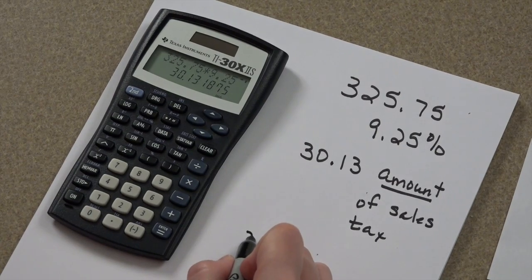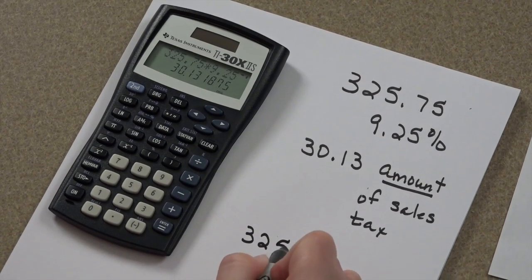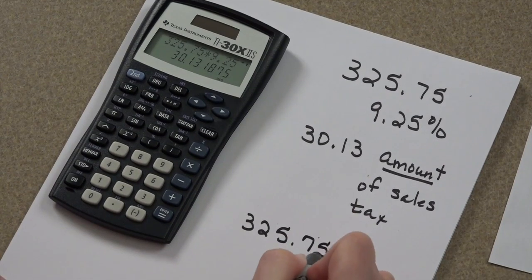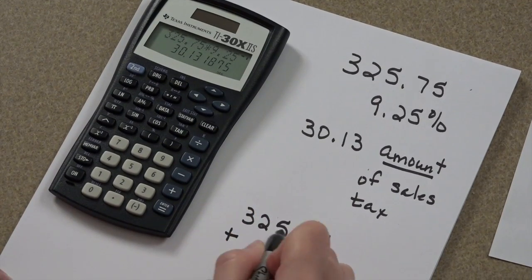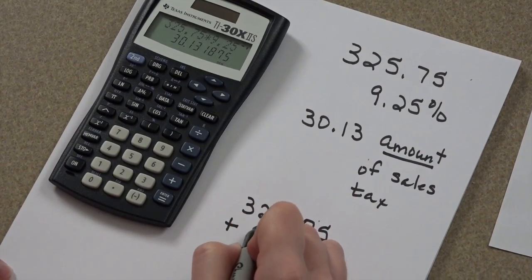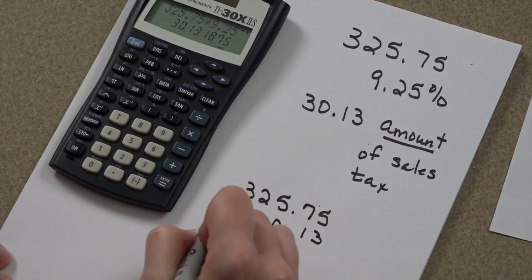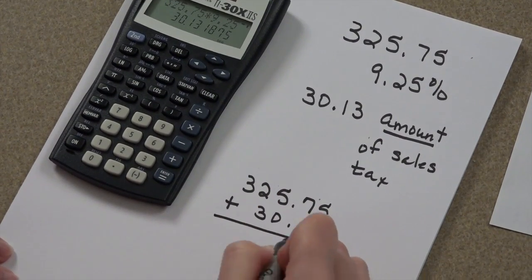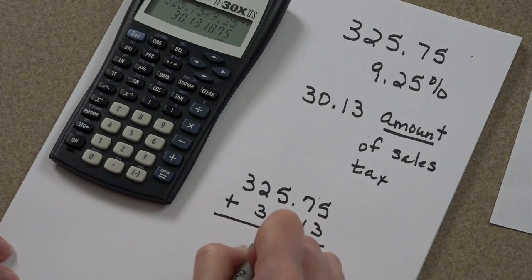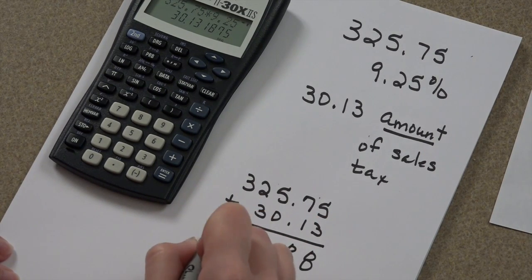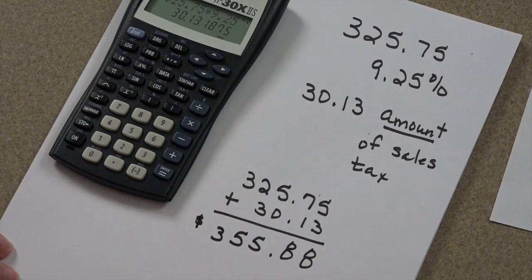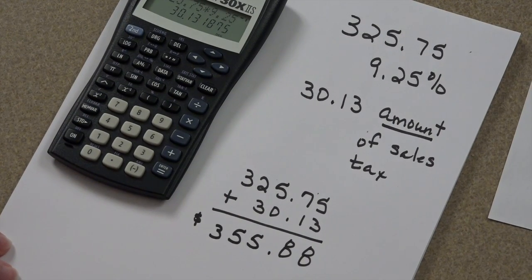To find the complete amount for that $325.75 item, you just simply add the two of them together. So, the original cost of the item plus the amount of your sales tax gives you $355.88.